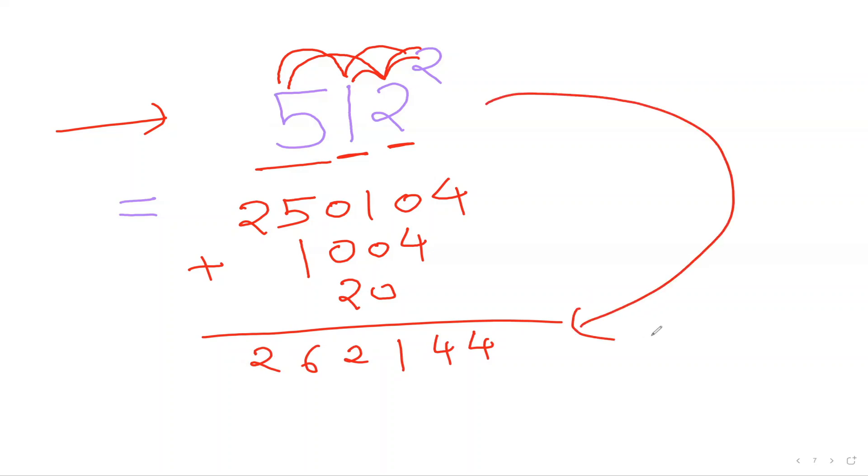Again, quickly, I'm just recapping my points. The first step is individual number square. 5 square is 25. 1 square is 01. 2 square is 04, which you can understand. Then first two numbers. So 5 times 1, which is 5 times 2, which is 10, right here. Then 1 times 2, which is 2 times 2, which is 4, which is right here. I'll write down that as a two-digit number.